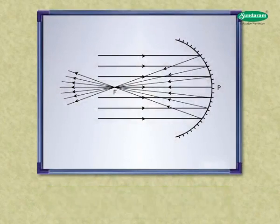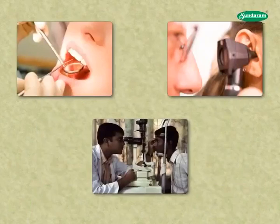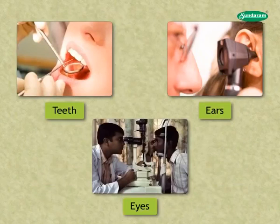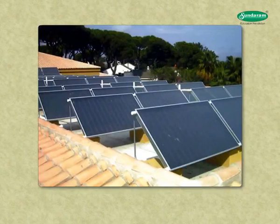When we want to concentrate light at a point, converging beam of light is used. Doctors use this type of beam to concentrate on teeth, ears, eyes, etc. Converging beam of light is also used in solar water heaters and other devices.